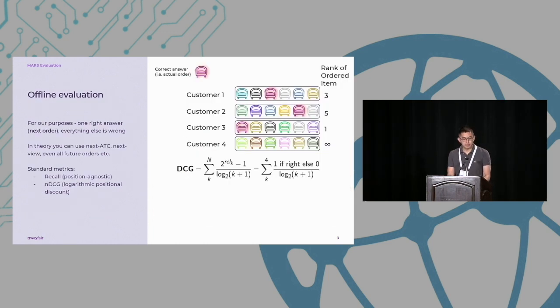So let's talk quickly about evaluation. Here we show the top six recommendations provided for four different customers, and the ordered item is highlighted in red. And these are in positions three, five, and one for the first three customers, and the fourth customer has no successful prediction at all.